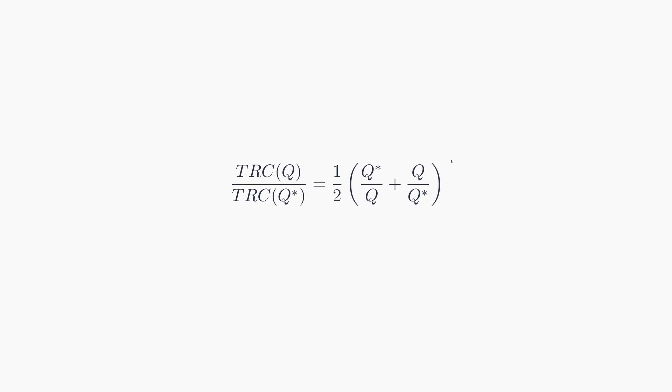Now, take a look at how this final expression, using just a variable q alongside the optimal q, effectively tracks the changes in the TRC compared to the optimal TRC. This is the formula for the total relevant cost sensitivity with respect to q.